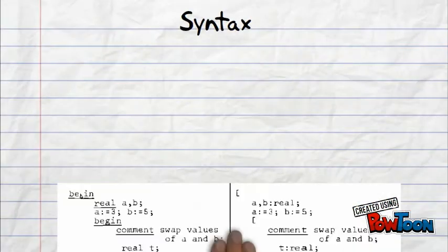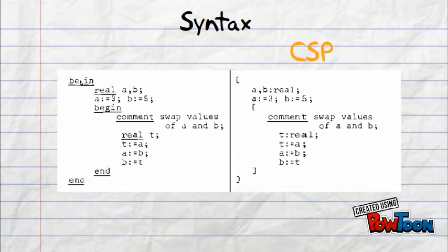Speaking about syntax, let's take a look at the comparison of CSP and Go programming language. As you can see, there are not many differences. We do here initializations and then swap the assigned values.